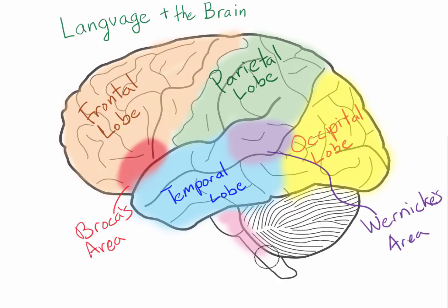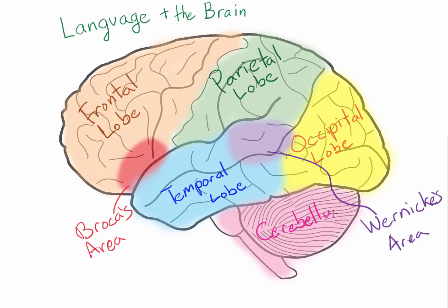Last but not least, we have the brainstem and the cerebellum. You might think those are just involuntary processes and not involved in language — but they kind of are. You need to keep breathing while you talk, so it's pretty important to have your cerebellum and brainstem keeping you breathing, keeping you alive. Think about the process of inhaling and exhaling while speaking at the same time.